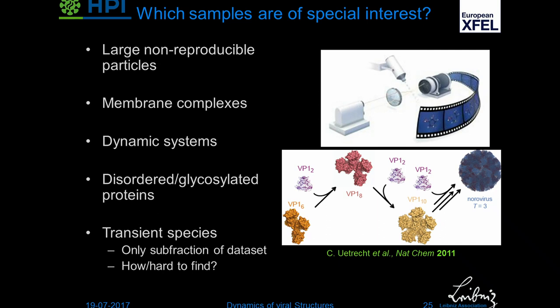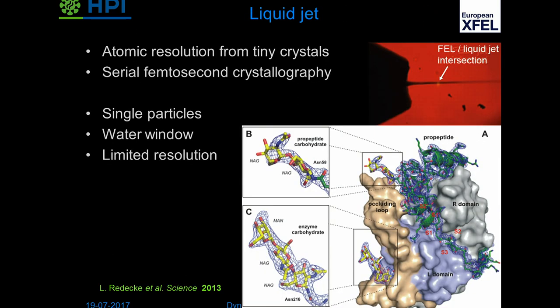Since it's possible to do single particles, it's obvious that everything that can't be crystallized is of interest — intact cells, membrane complexes, dynamic systems, disordered proteins, and most importantly, transient species. But this poses another problem: they only make up a sub-fraction of your dataset, so it's very difficult to find them. You have to acquire a lot of data, which takes a lot of time. It would be nice if you could somehow filter them out. This brings us to the question of how we get sample in: the most popular way is liquid jets, like the ones you can see here.